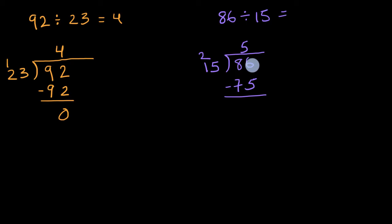And then I have a remainder here. Six minus five is one. Eight minus seven is one. And 11 is less than 15, so I can't divide into it anymore. And so this is five with a remainder 11.